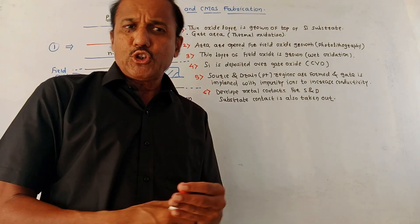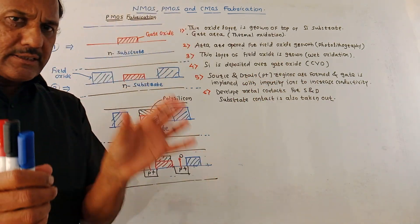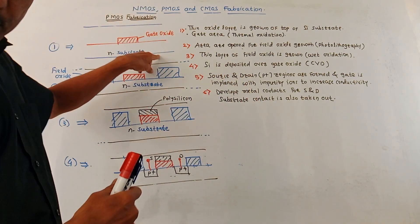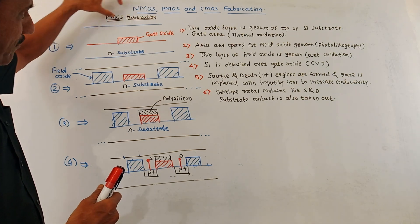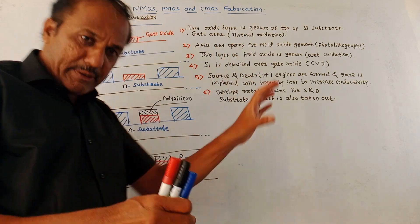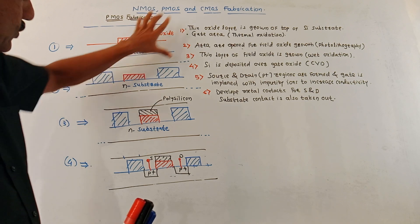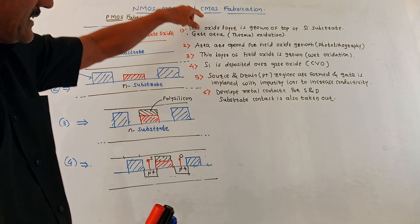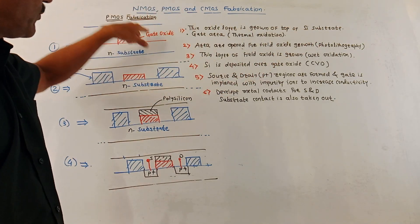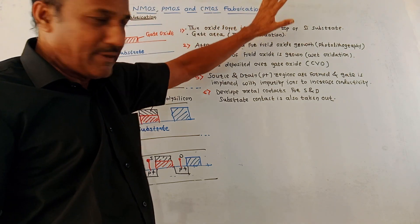Now let us discuss PMOS fabrication. Compared to NMOS fabrication, slight changes are there. For NMOS, a P-type substrate was used. For PMOS fabrication, exactly the reverse procedure is done — an N-type substrate is used. The first steps remain the same: a thin oxide layer is grown on top of the silicon substrate forming the gate oxide or gate dielectric, again using the thermal oxidation method.